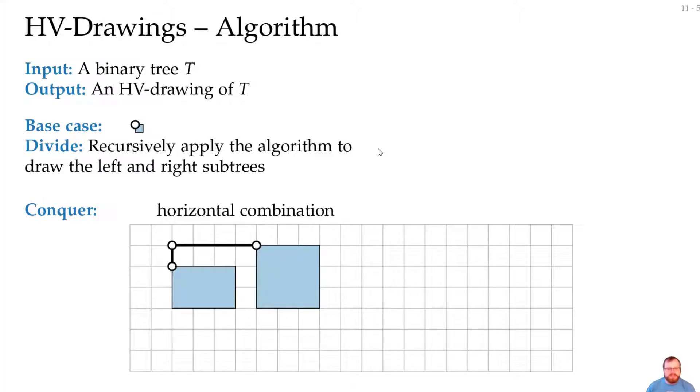There are basically two ways that we can merge the subtrees. The first is the horizontal combination. We place the left subtree directly below the parent and the right subtree, we move to the right as far as we have to so that they don't overlap. And the second is the vertical combination. We just put the right subtree first and then we move the left subtree as far down as we have to so that they don't overlap.